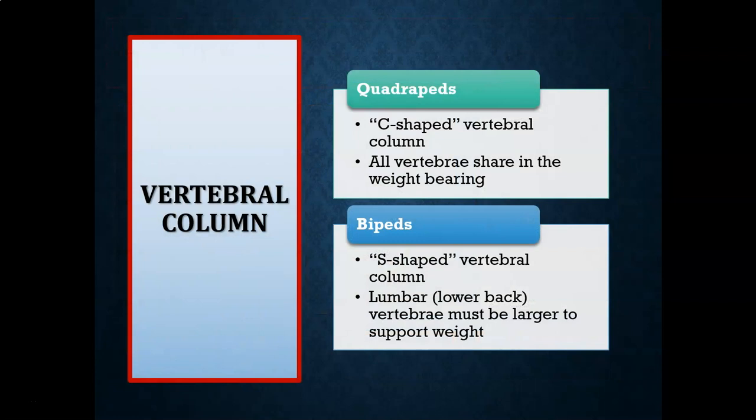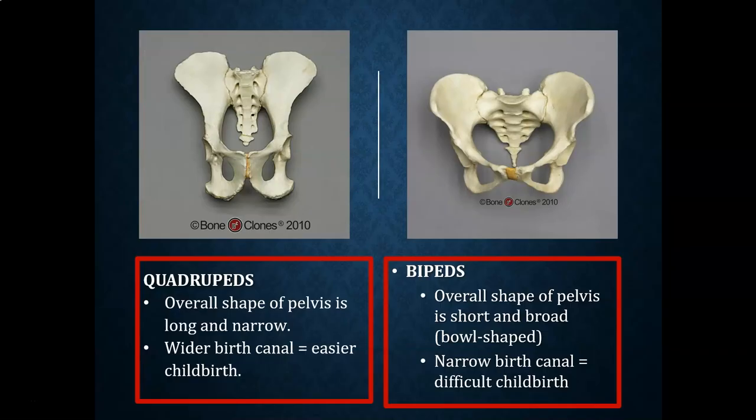The vertebral column is the next anatomical feature distinguishing quadrupeds from bipeds. Quadrupeds have a C-shaped vertebral column with relatively uniform-sized vertebrae, as each supports about the same amount of weight. Bipeds have a more S-shaped curvature, and the lumbar or lower back vertebrae are much larger because they support more weight. Lumbar and thoracic back pain remains one of the top reasons modern humans visit a doctor — suggesting we are not perfectly adapted to bipedal locomotion even six million years later.